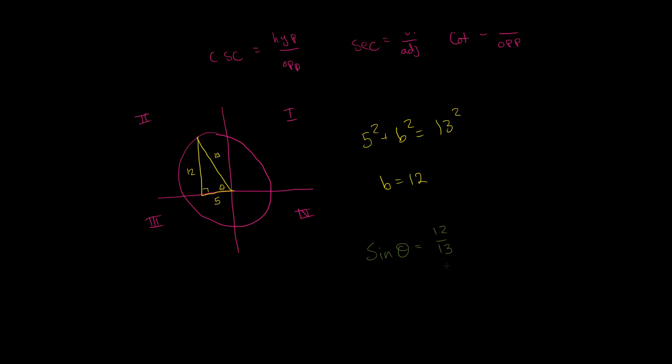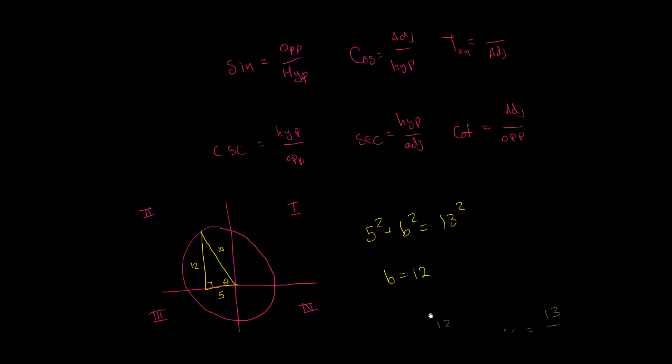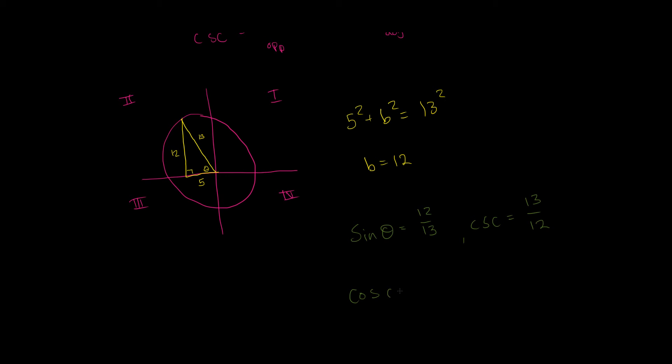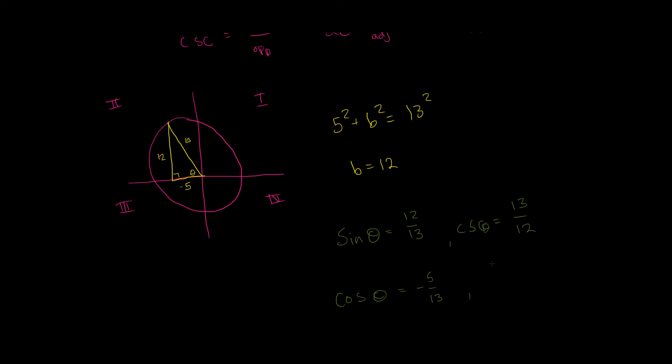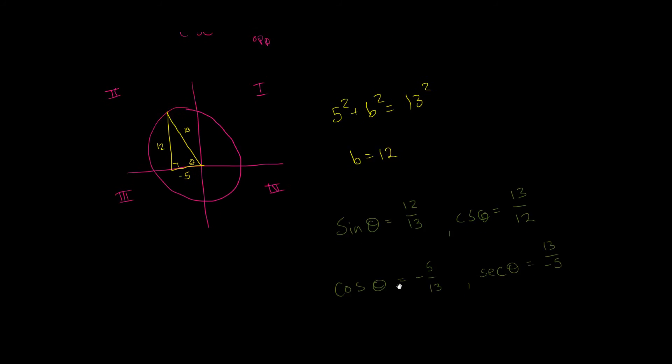Likewise, we can find our cosecant by just flipping it. So, we get cosecant is equal to 13 over 12. Okay. We already know our cosine. Our cosine of theta is equal to negative 5 over 13. Because this is negative 5 right here. So, our secant value is easy to find. That's just the reciprocal of this. So, our secant theta is equal to 13 over negative 5.